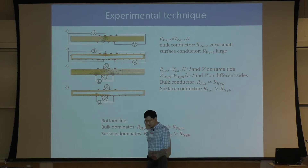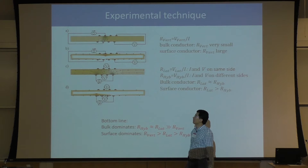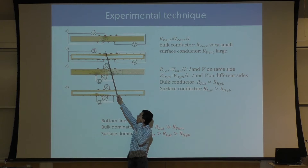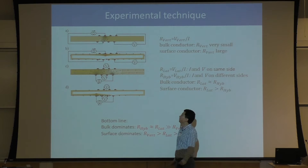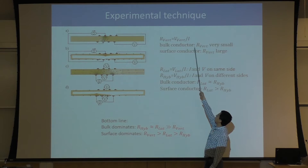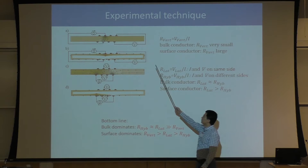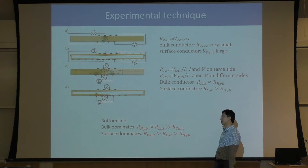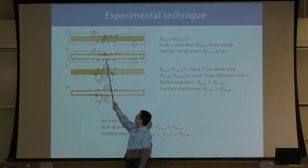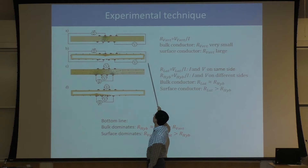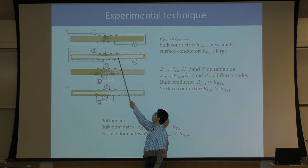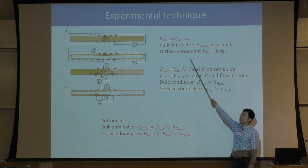For example, he can send the current in from the top leads and get it out from the bottom leads. If SMB6 is a bulk conductor, electrons will choose the shortest path directly from top to bottom, so the voltage between leads on the same side will be zero, giving a very small four-terminal resistance R-vertical. But if SMB6 is a surface conductor, electrons cannot take this shortest path and instead flow around the edge — this creates a large current and large voltage, giving a large resistance for a surface conductor.